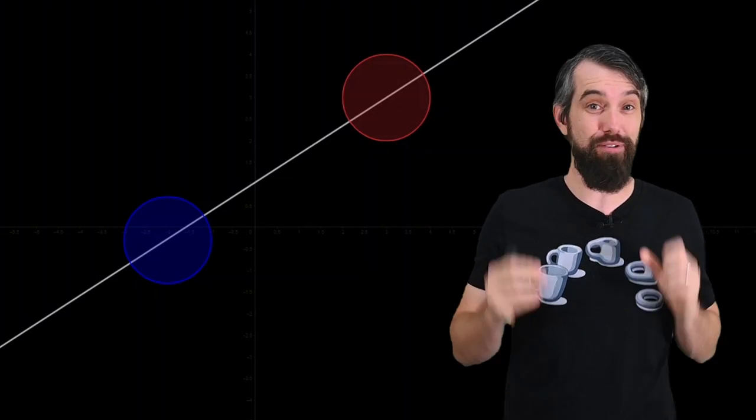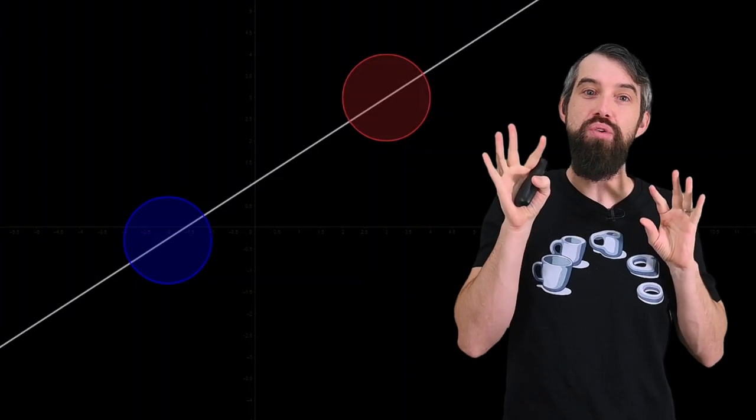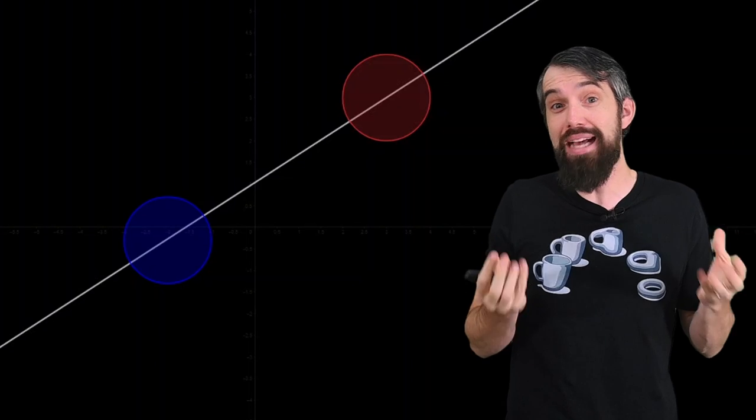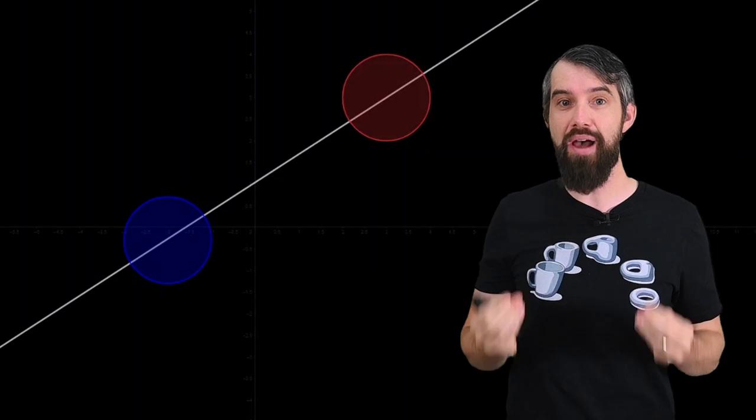So the pancake theorem says that for any two objects there's always one line that you can cut exactly in half. And really, the pancake theorem is just proven as an application of the intermediate value theorem.